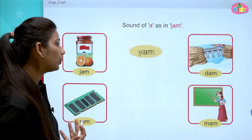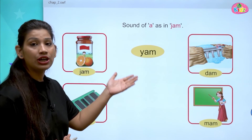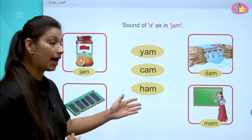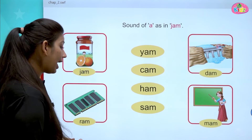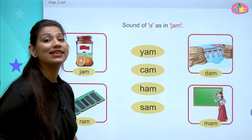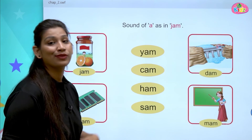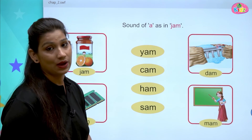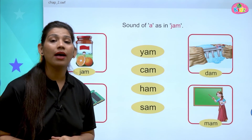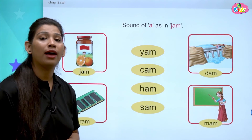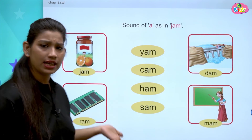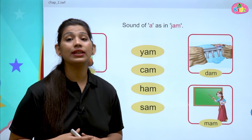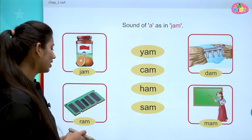Let us understand more words like Y, A, M — Yam. K, A, M — Cam. H, A, M — Ham. S, A, M — Sam. All these words are with A sound, all are ending with AM sound. Only the first letter is changed; otherwise all the words are with AM sound.